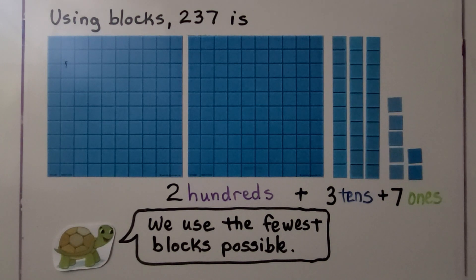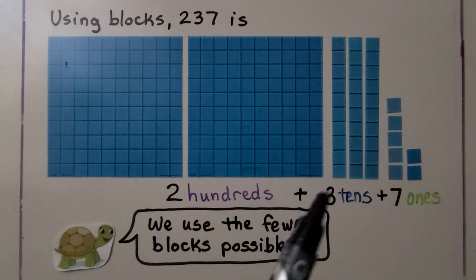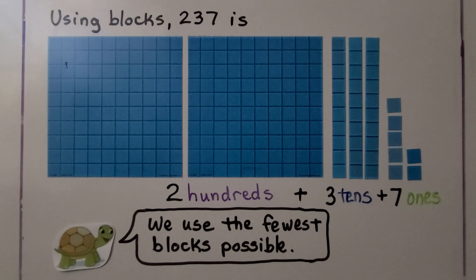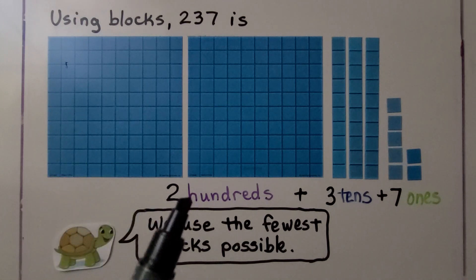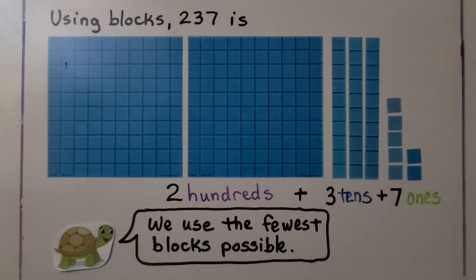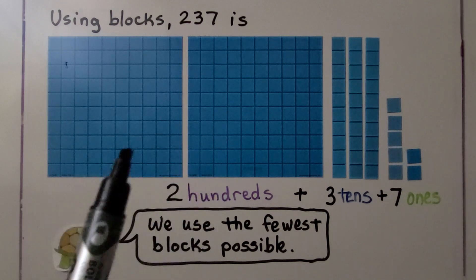Using blocks, 237 is two hundreds plus three tens plus seven ones. We use the fewest blocks possible — that means we try not to use too many blocks. If it's two hundreds, we use two hundred blocks. We use three tens and seven ones. We don't use tens for the hundreds; we use the hundred blocks.